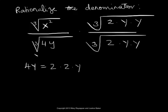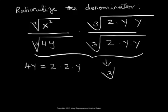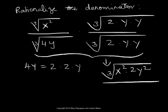That now becomes cube root of x squared times 2y squared divided by cube root of 4 times 2 is 8, and y times y times y would be y cubed.